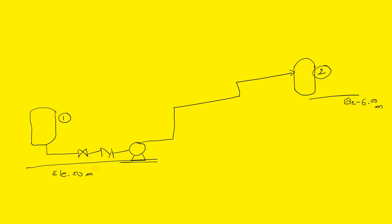Now, before we discuss about the system curve or pump curve, we are using a pump here. My question is why? You will say we have to transfer the fluid from one location to another location, that is why we are using the pump. We have to transfer the liquid — for example, water — from this location to this location. Here the pressure is P1 and here the pressure is P2. So where should the high pressure be? Obviously at P2 — P2 should be greater than P1.